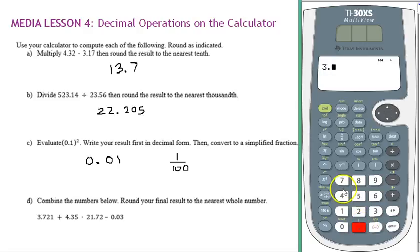3.721 plus 4.35 times 21.72 minus 0.03. I hit enter, and notice we're asked to round our result to the nearest whole number. That means this is the ones place, so that would be our nearest whole number. Look to the right. The tenths place is less than 5, so our result is going to be 98.